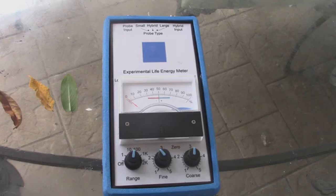Alright guys, so what we have here is the experimental life energy meter built based on something that Wilhelm Reich used to use to measure the amounts of orgone energy in certain objects. So check it out.